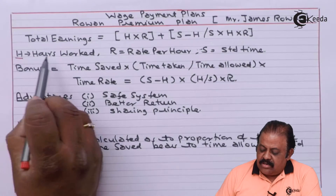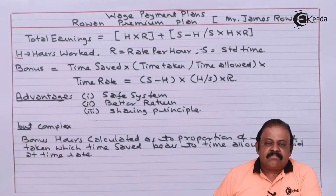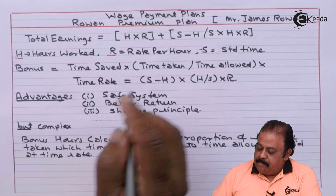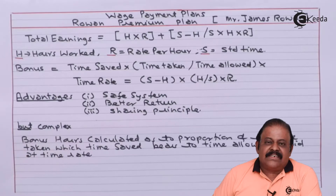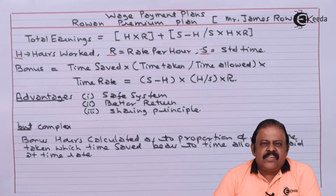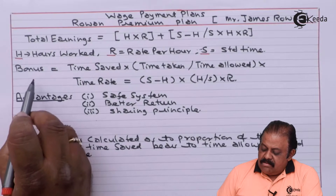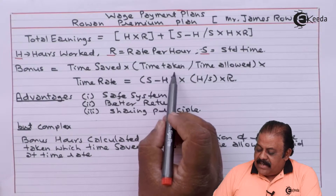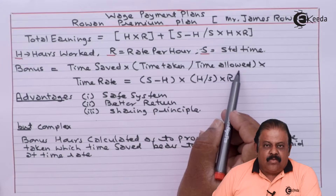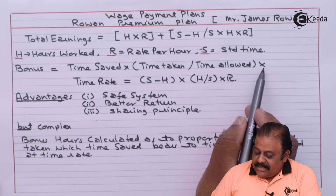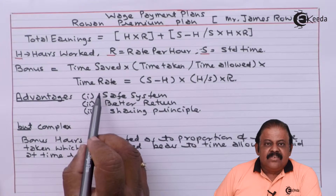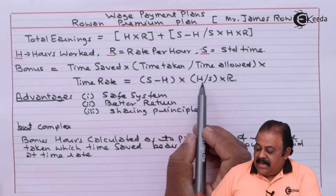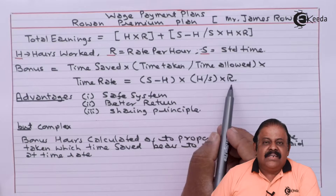Here, H stands for hours worked, R stands for rate per hour, and S stands for standard time. Under this method, bonus can also be calculated separately. Bonus is equal to time saved multiplied by time taken divided by time allowed, multiplied by time rate — that is, S minus H, multiplied by H divided by S, multiplied by R.